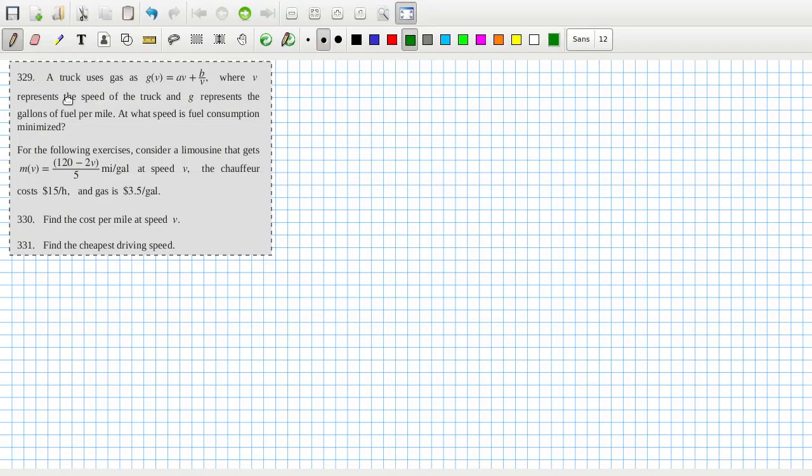Okay, let's have a look here. This question, now 29: A truck uses gas at that rate where v represents the speed of the truck and g represents the gallons of fuel per mile.